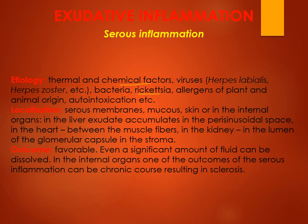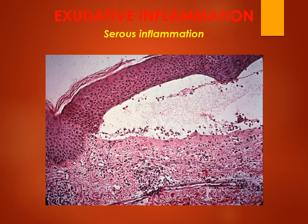Serous inflammation is found on the mucosa — you can see serous inflammation on the mucous membrane here. It is basically on the internal organs and mucosa membranes.